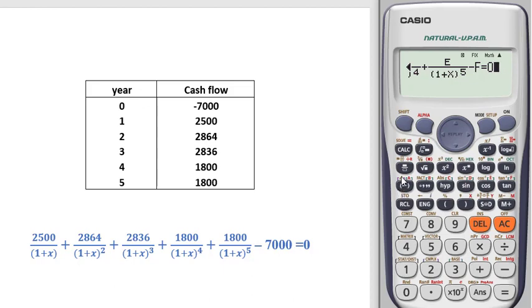So shift solve A equal to 2500, yes correct. B equal to 2864, yes correct. Just press equal sign. X equal to 0, don't write anything, just press equal sign. So you have your result, 0.22097657. So if you convert it into percentage it will be 22 percent.